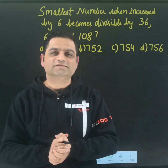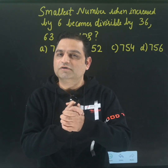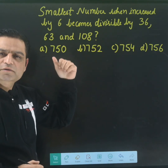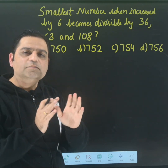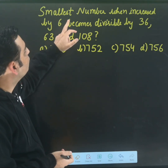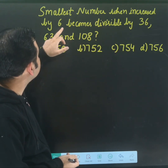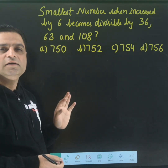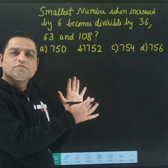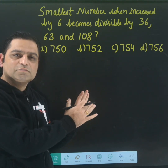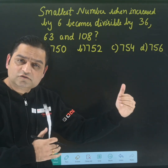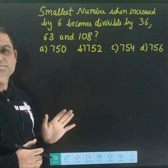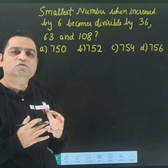Hello friends, welcome to Nankesh our classes. Today's lecture is going to be very interesting. The question is: find the smallest number which when increased by 6 becomes divisible by 36, 63, and 108. There are 4 options. We need to find the smallest number such that when we increase it by 6, that number is divisible by all three.